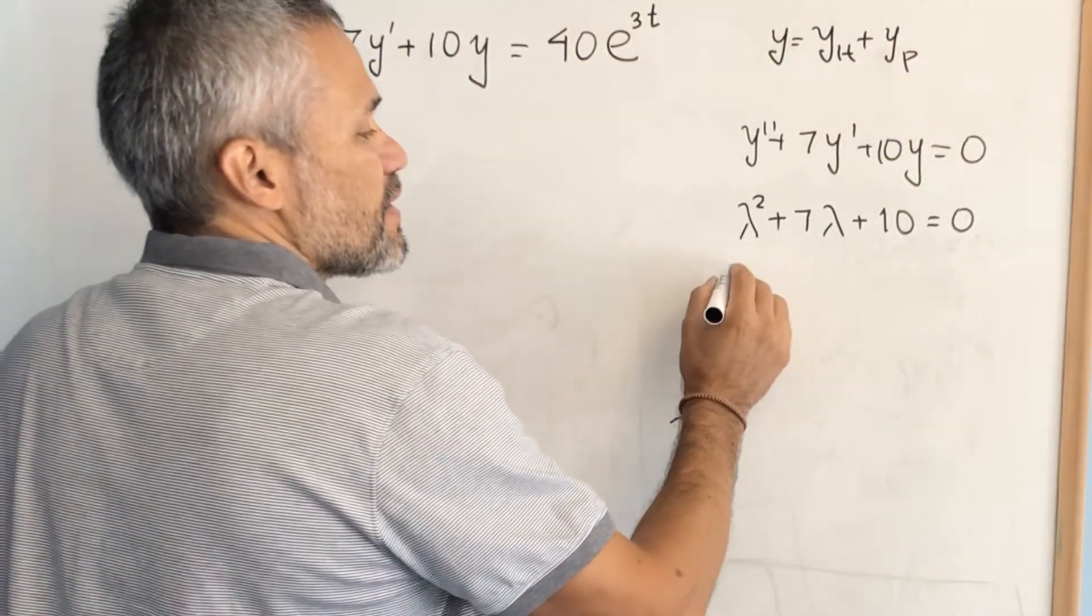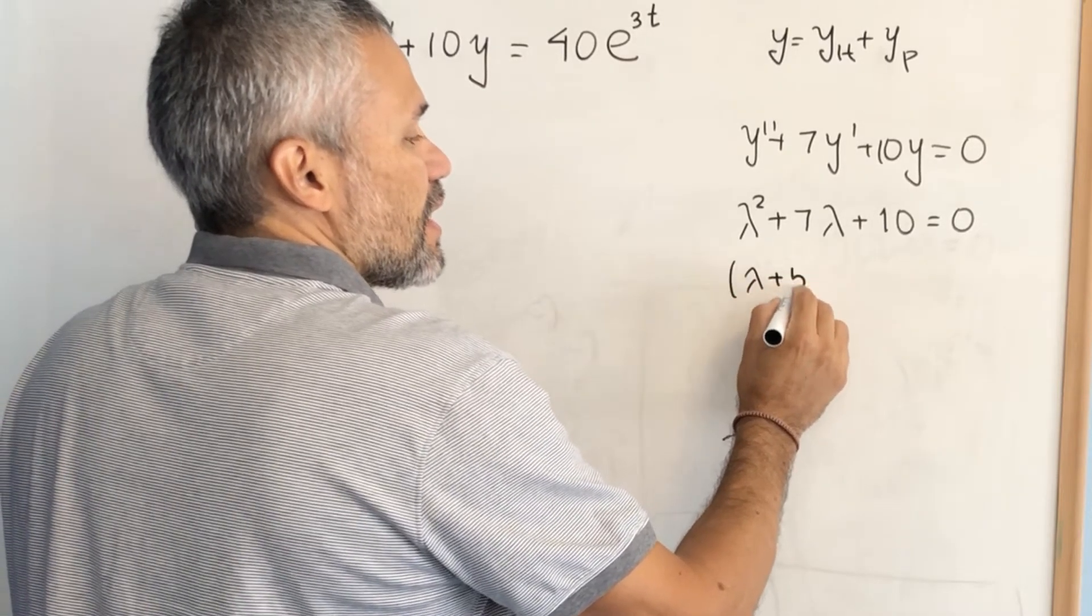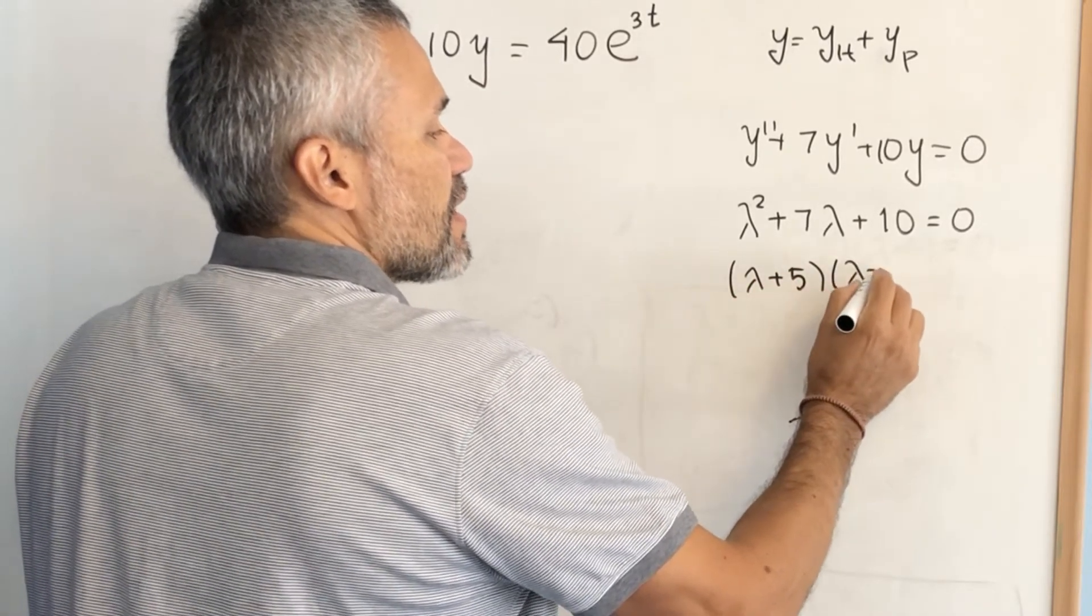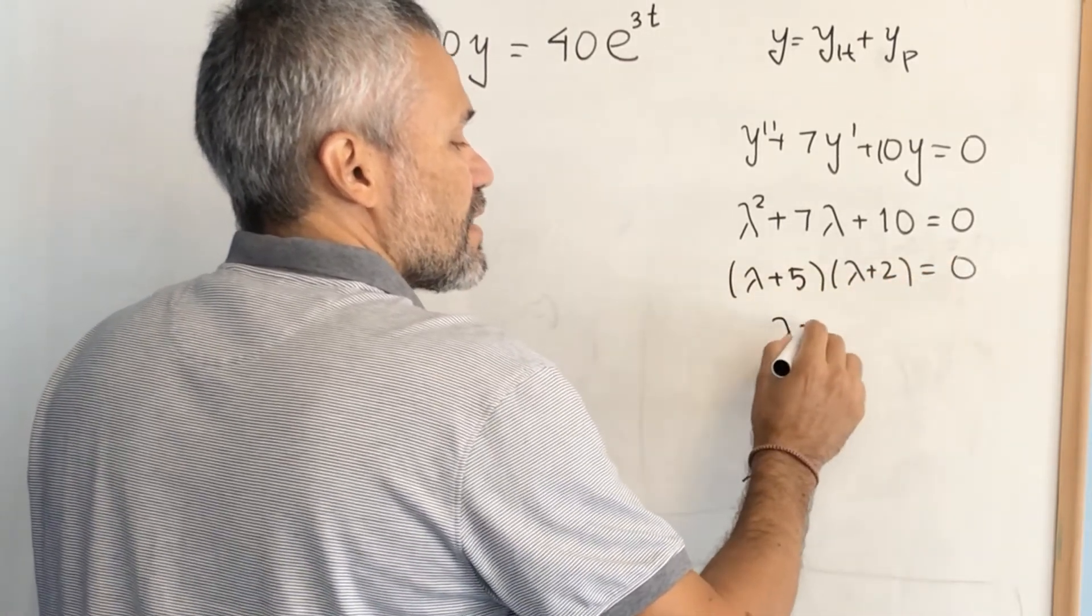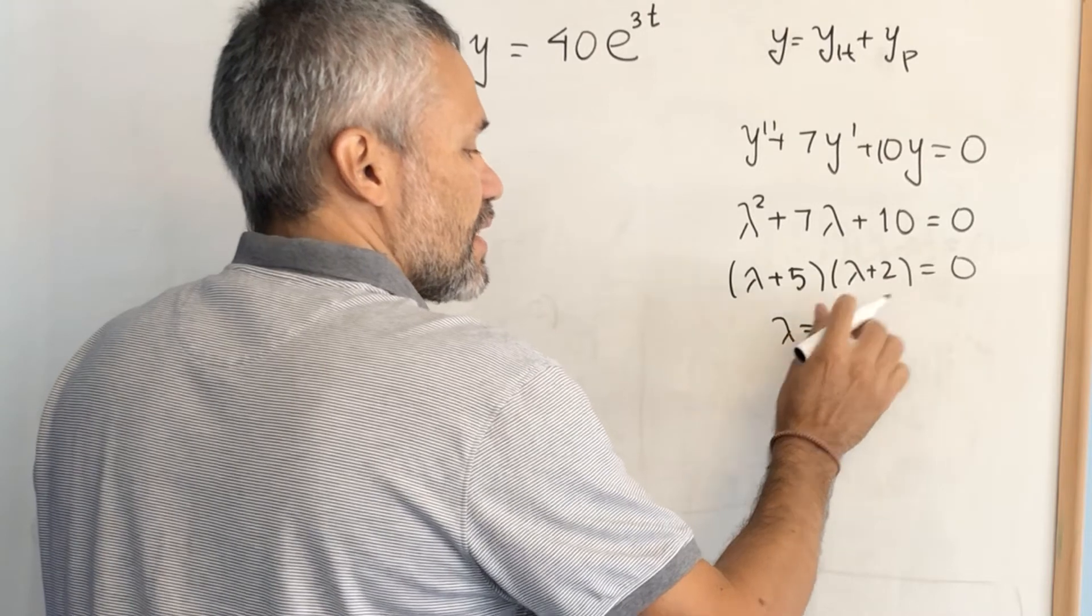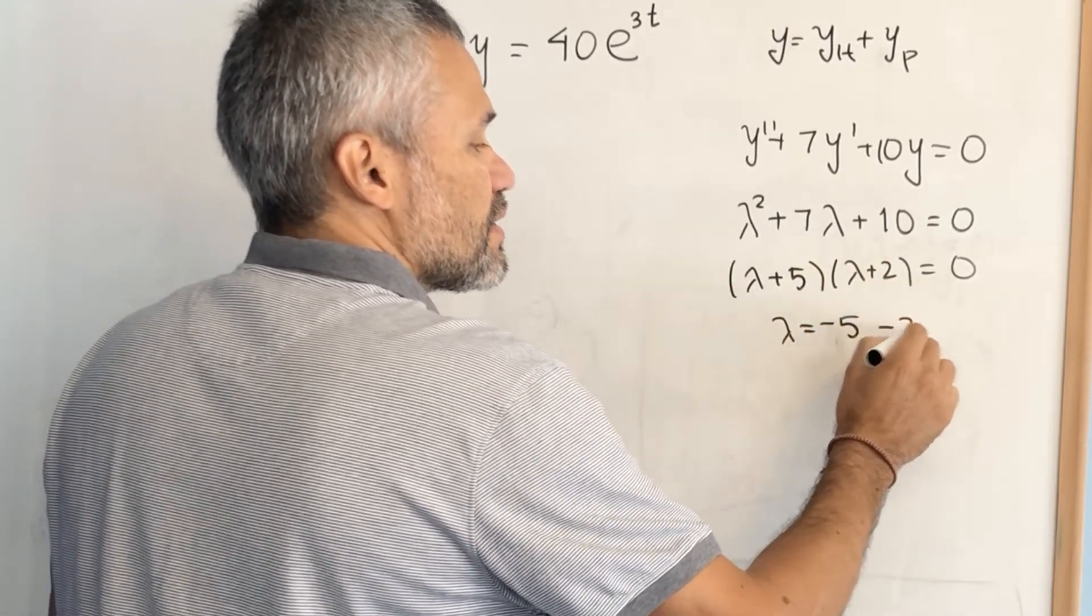The solution of this quadratic equation, in this case we can factor, this is lambda plus 5 times lambda plus 2 equals 0. That means that lambda is either negative 5 or negative 2.